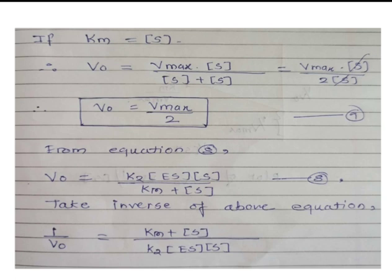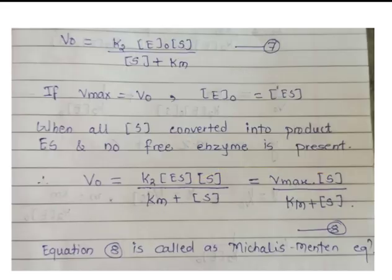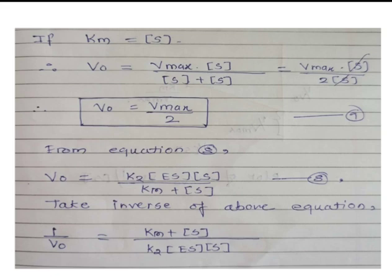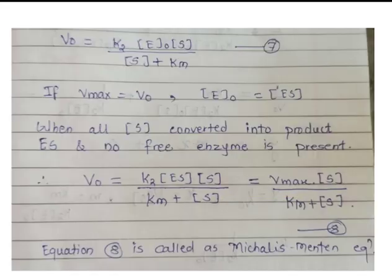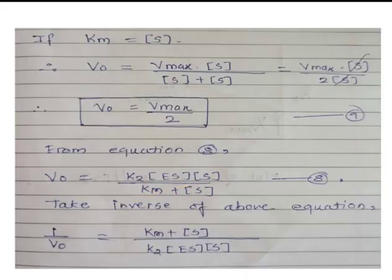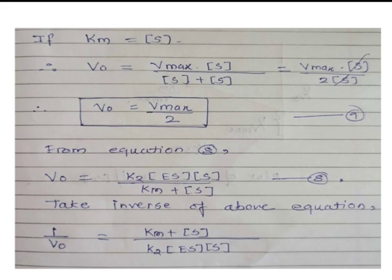Taking the condition Km = [S] and substituting into equation 8: V0 = Vmax[S] / ([S] + [S]) = Vmax[S] / 2[S]. The [S] terms cancel, giving V0 = Vmax/2. This is equation 9, showing that Km equals the substrate concentration at which V0 is half the maximum rate.